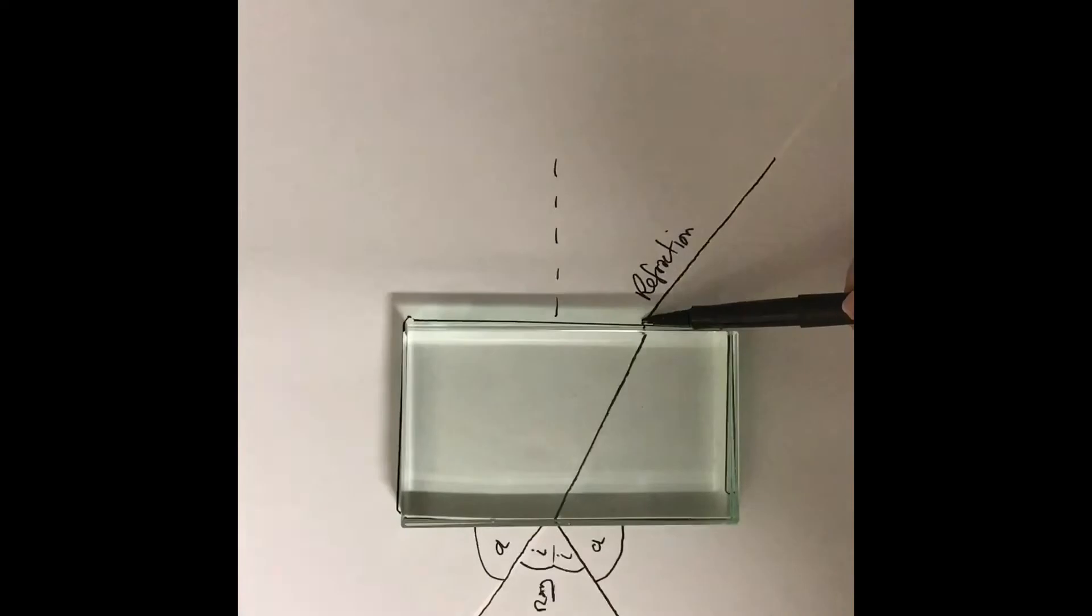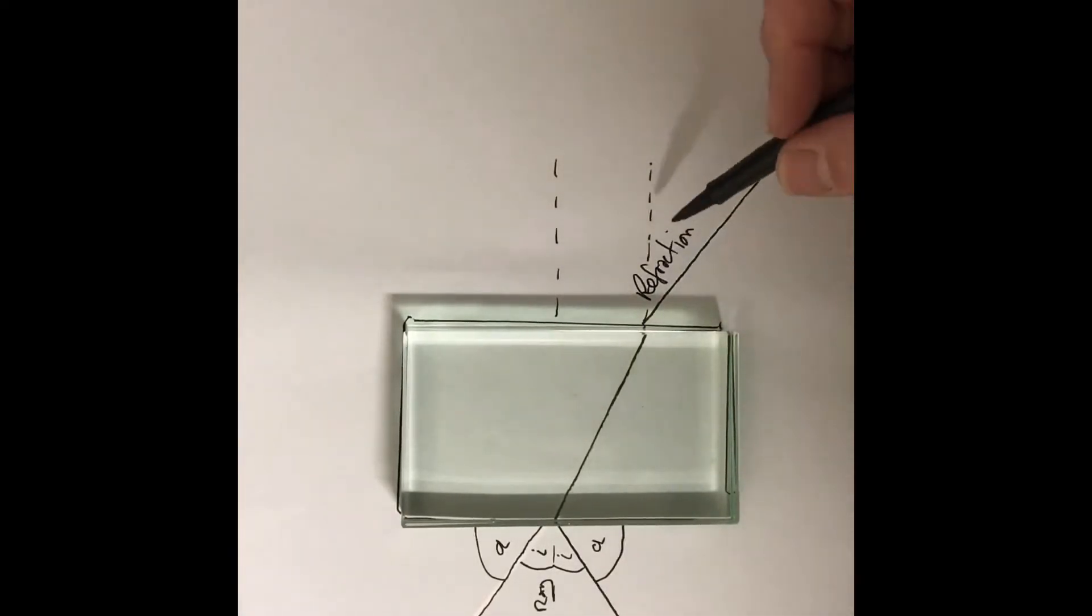Also notice that if I parallel to the normal ray, the refraction will also cause an angle. This angle here is also the incident angle, which will match the incident angle over here.